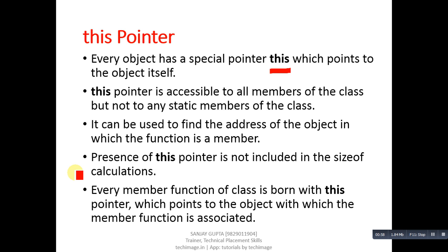Last point says every member function of the class is born with this pointer. It means in every member function, this pointer is inbuilt which points to the object with which the member function is associated. So if you call a member function through an object, that object's address will be received by this pointer automatically.